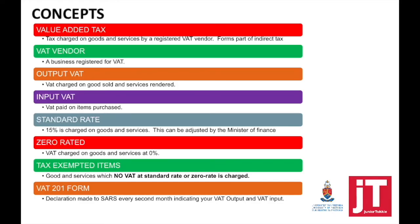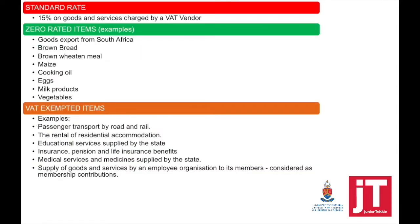It is imperative that you study your concepts. Know what is the difference between Standard Rate, Zero Rated Items and VAT Exempted Items. A reminder: Zero Rated Items — VAT is charged but at 0%. VAT Exempted Items — VAT is not charged.